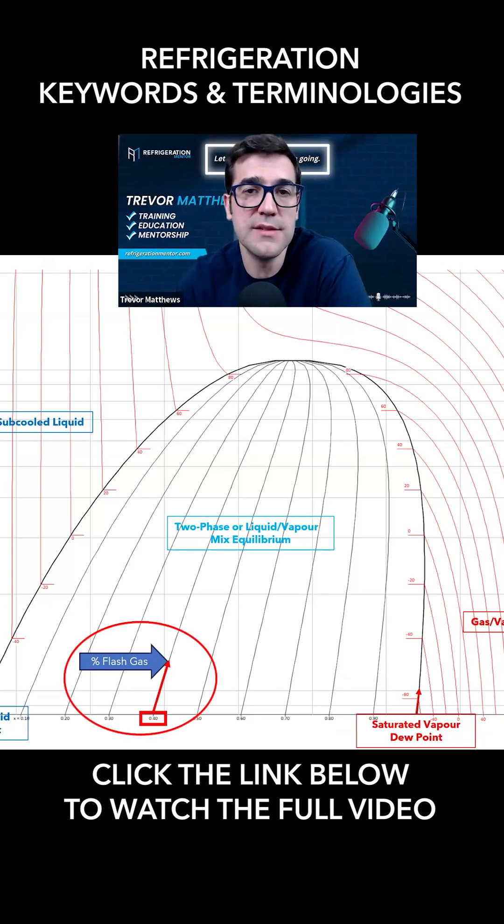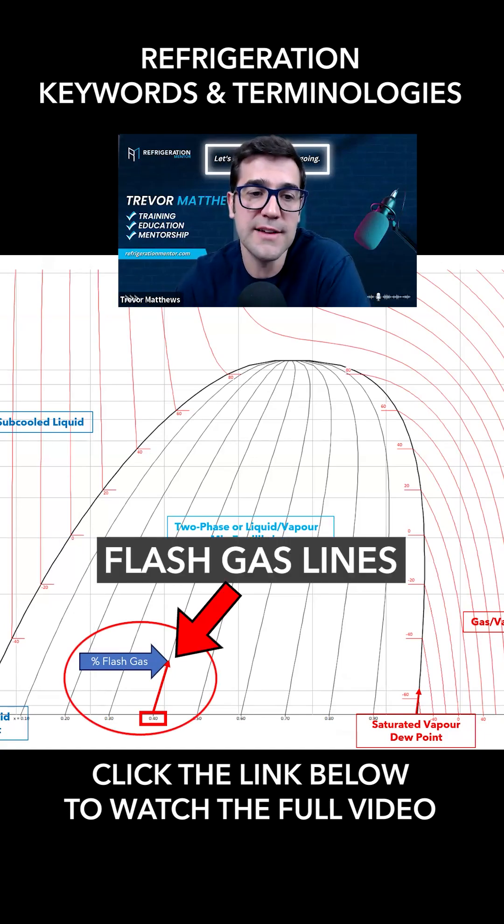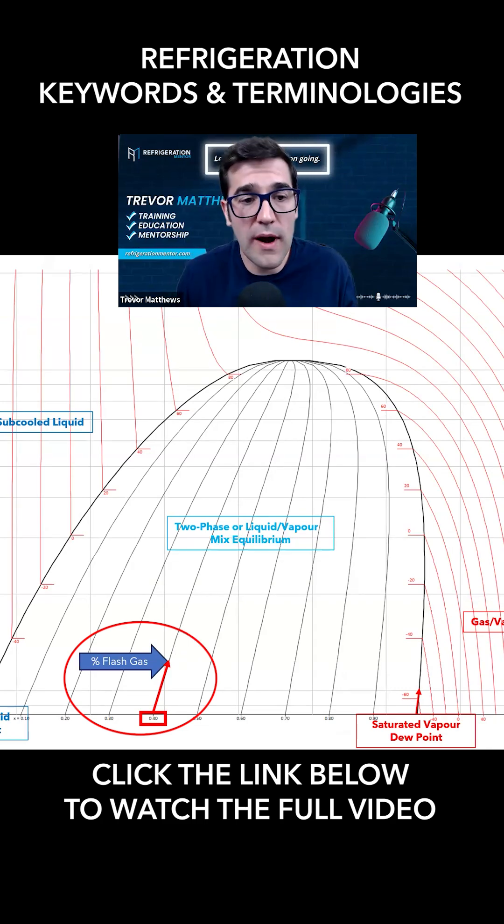Inside these, there's these lines here called the flash gas lines, the percentage of flash gas lines. This is really important to understand how much flash gas is in that receiver or coming out of that high-pressure valve, coming down the drop leg from the condenser. This is super important because it's going to tell us how that system is running.